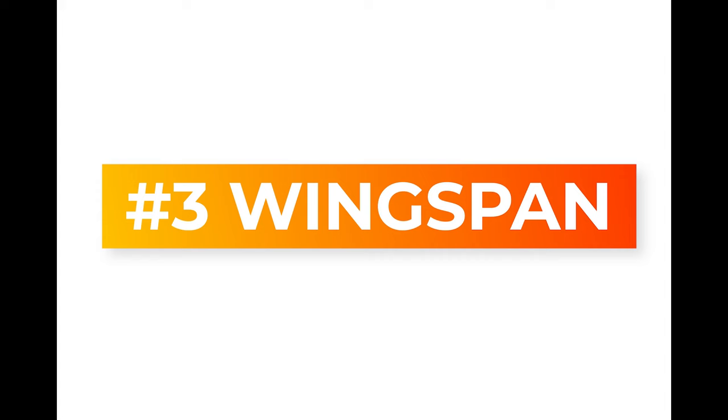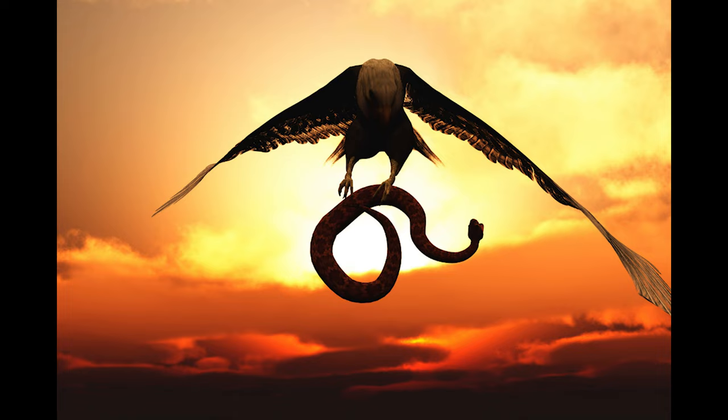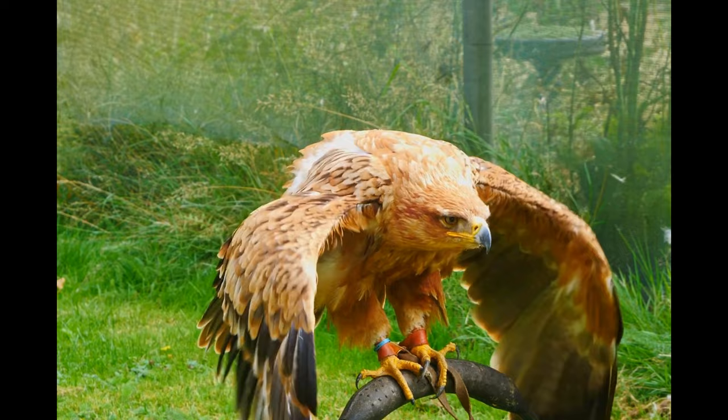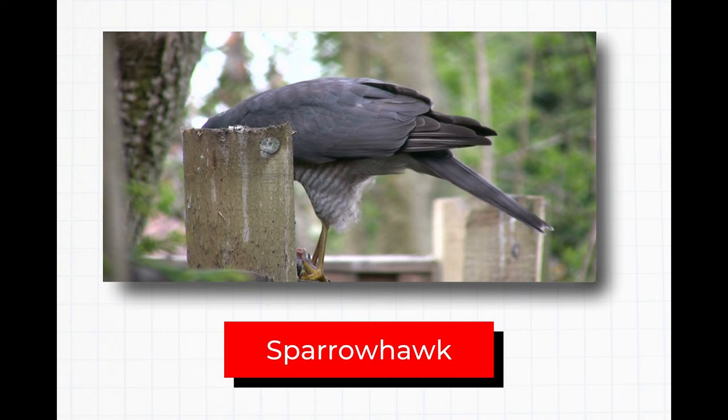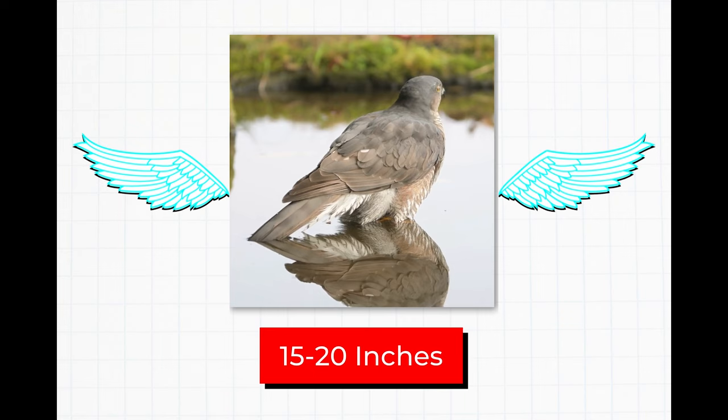Number three. Another difference between a hawk and an eagle is their wingspan. As with size, eagles typically sport more enormous wingspans than hawks. The little sparrowhawk ranks as one of, if not the smallest hawk species. On average, their wingspan measures between 15 and 20 inches.